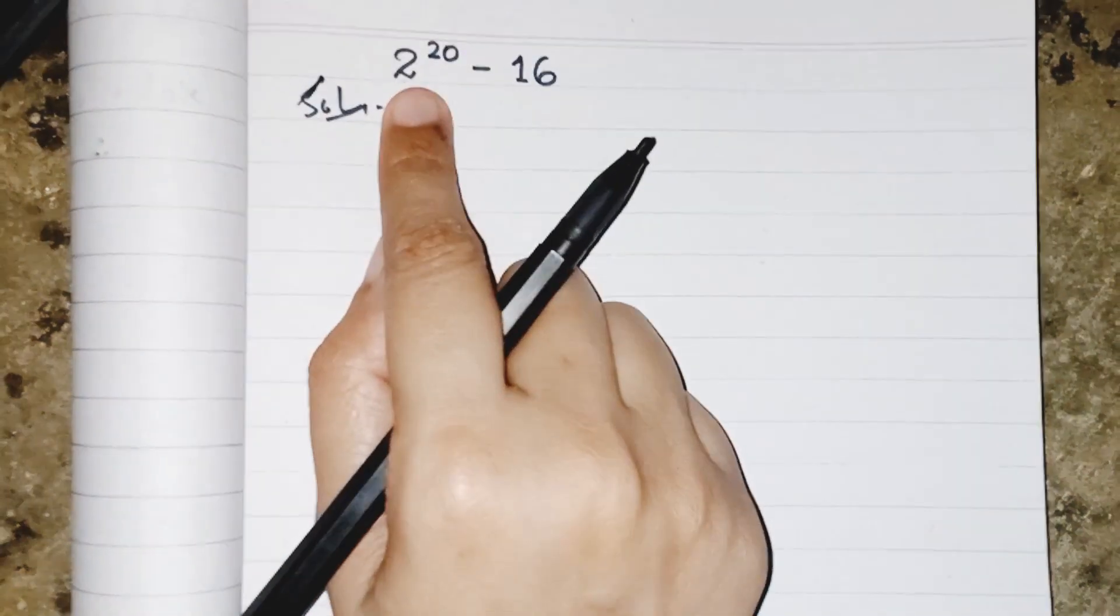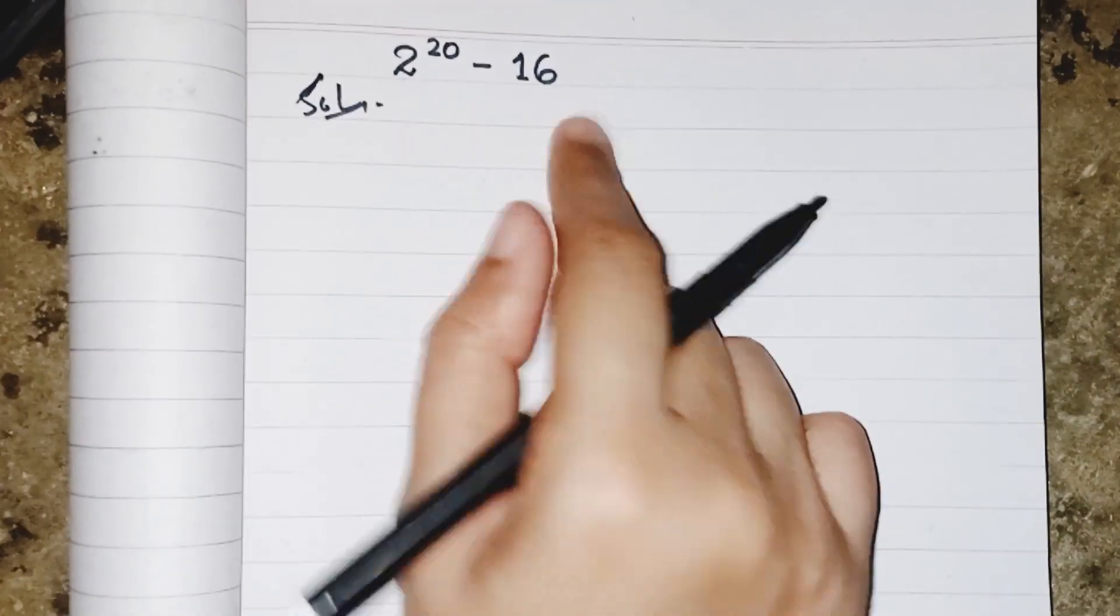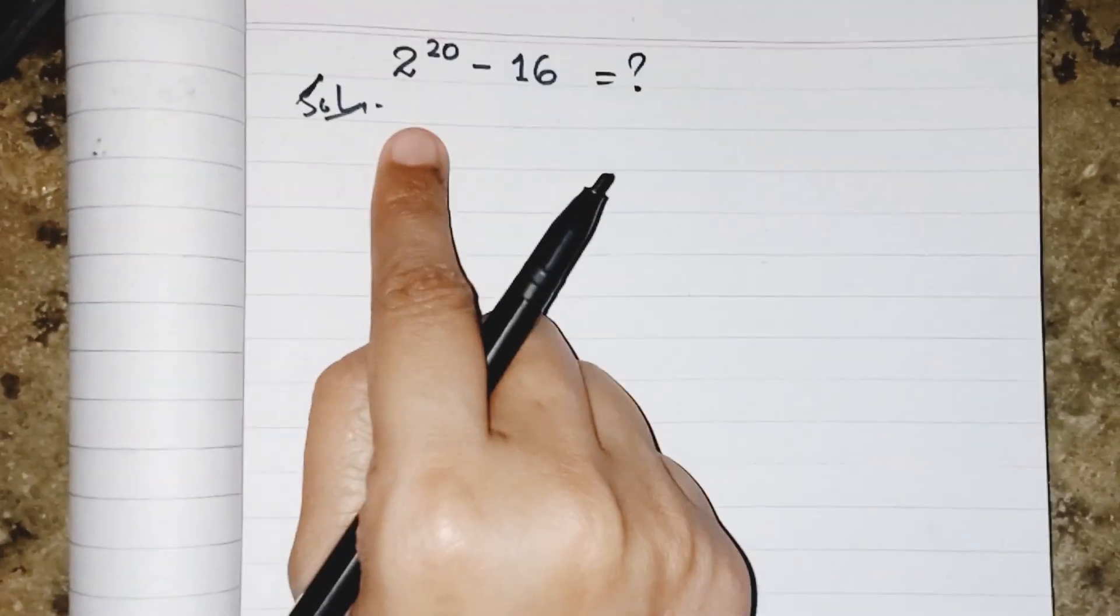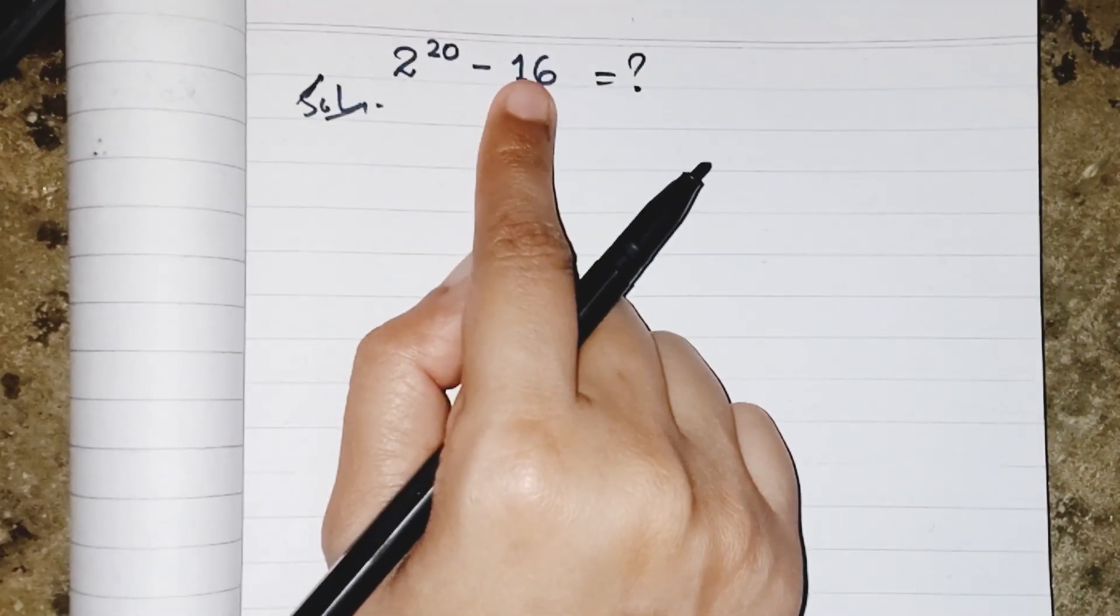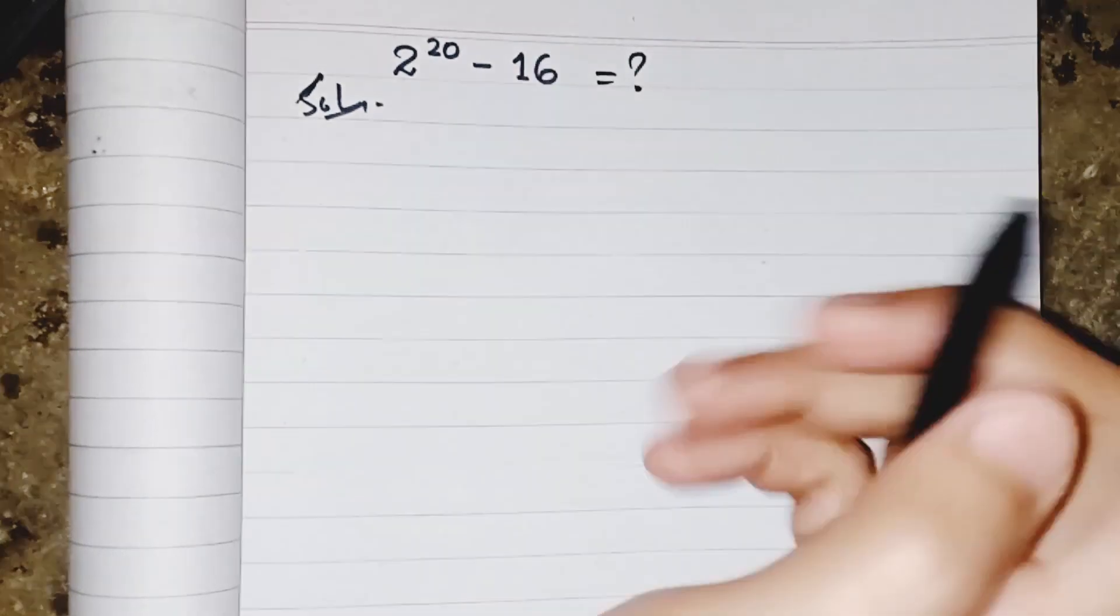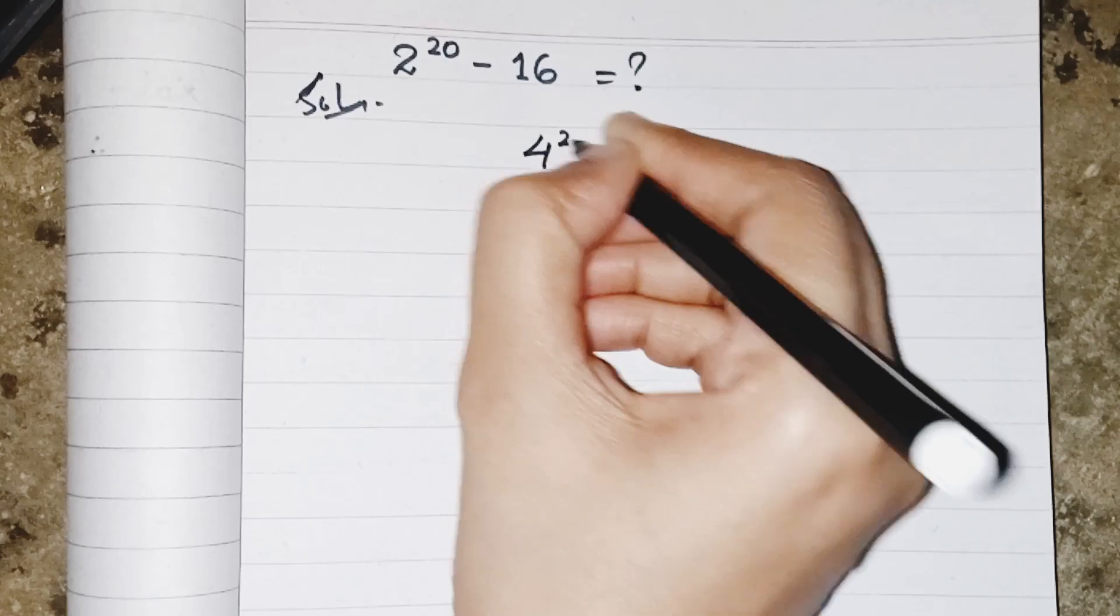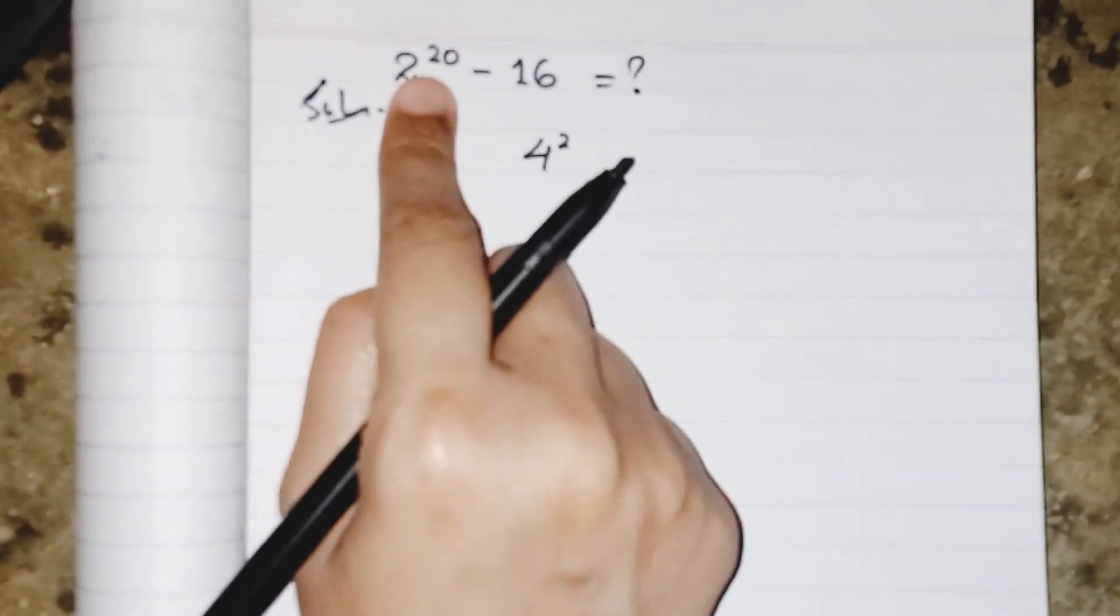Hello everyone, today's question is 2 to the power 20 minus 16 equals what? We have to find the answer. To do that, I'm simply converting this 16 into exponential form, so I can write 4 squared.